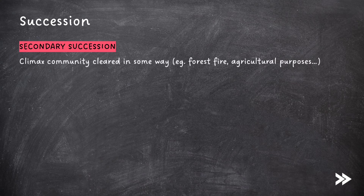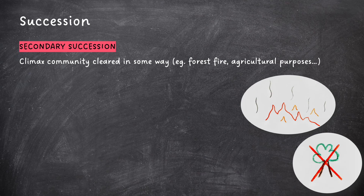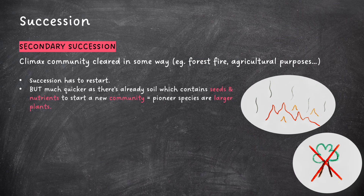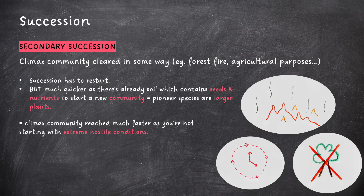We also have secondary succession. In secondary succession, the climax community is cleared in some way — for example, because of a forest fire or agricultural purposes — and succession has to restart. However, succession occurs much more quickly, as there is already soil containing seeds and nutrients to start a new community. Pioneer species are larger plants, and therefore a climax community is reached much faster, as you are not starting with extreme hostile conditions.